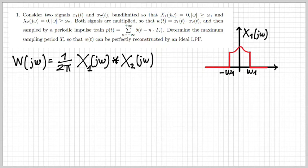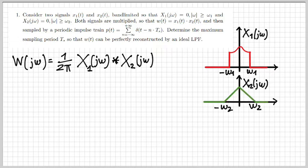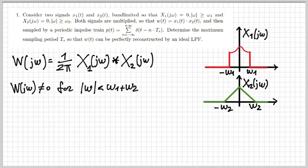We don't know the exact shape of the spectrum of X1(jω), but we know it's non-zero between −ω1 and ω1. Similarly, X2(jω) is non-zero between −ω2 and ω2. We can therefore conclude that W(jω) will be non-zero only for |ω| smaller than ω1 + ω2. This is because the bandwidth of the convolution is given by the sum of the two individual bandwidths.